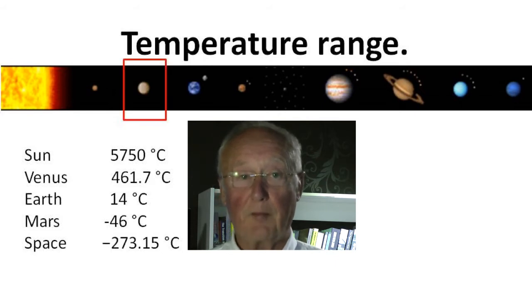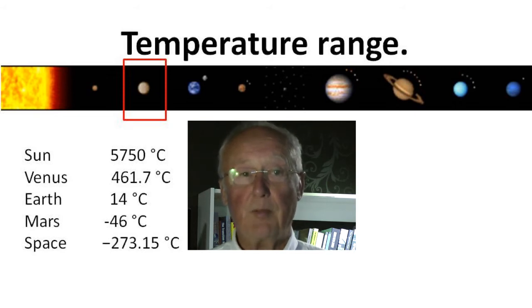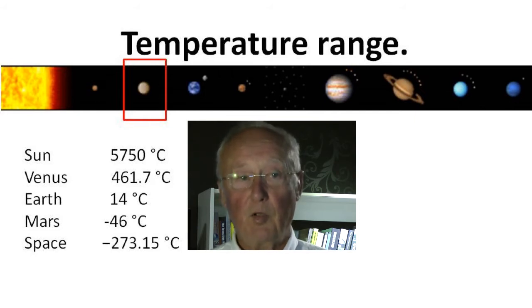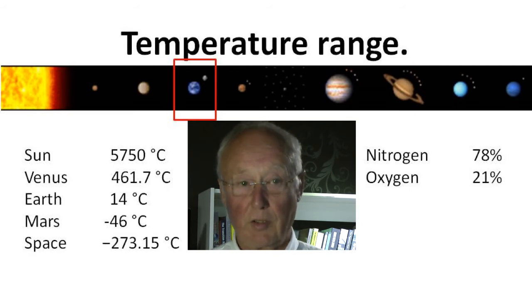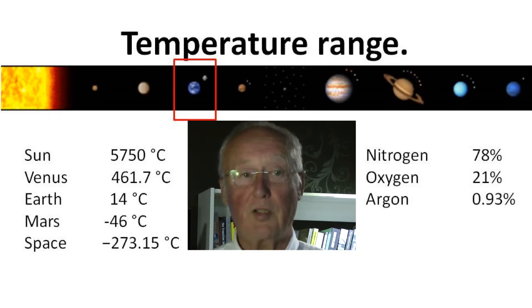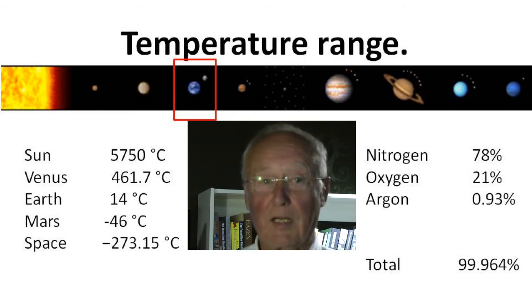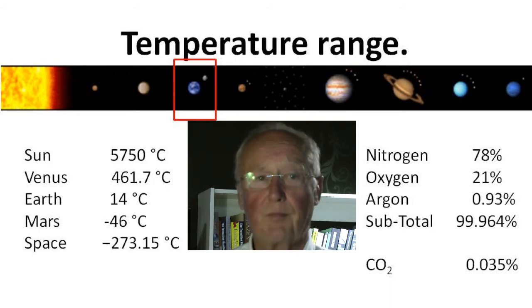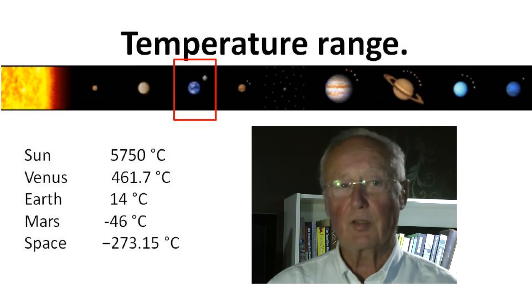Venus, which is the second planet out from the sun, has a dense atmosphere that is 96% CO2 and a temperature that will melt lead, which is at 461 degrees centigrade. Earth is the blue planet and our atmosphere consists of 78% nitrogen, 21% oxygen, 0.93% argon, amounting to a total of 99.964% of the atmosphere. This leaves a small amount for other gases including CO2 at 0.035%, and Earth's temperature is 14 degrees centigrade.